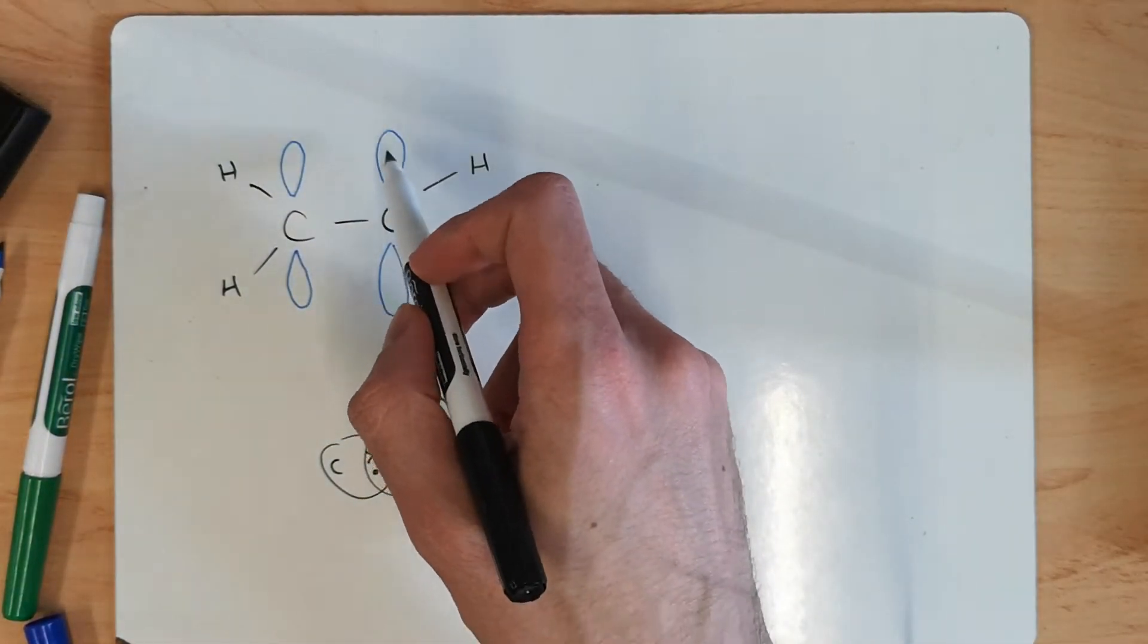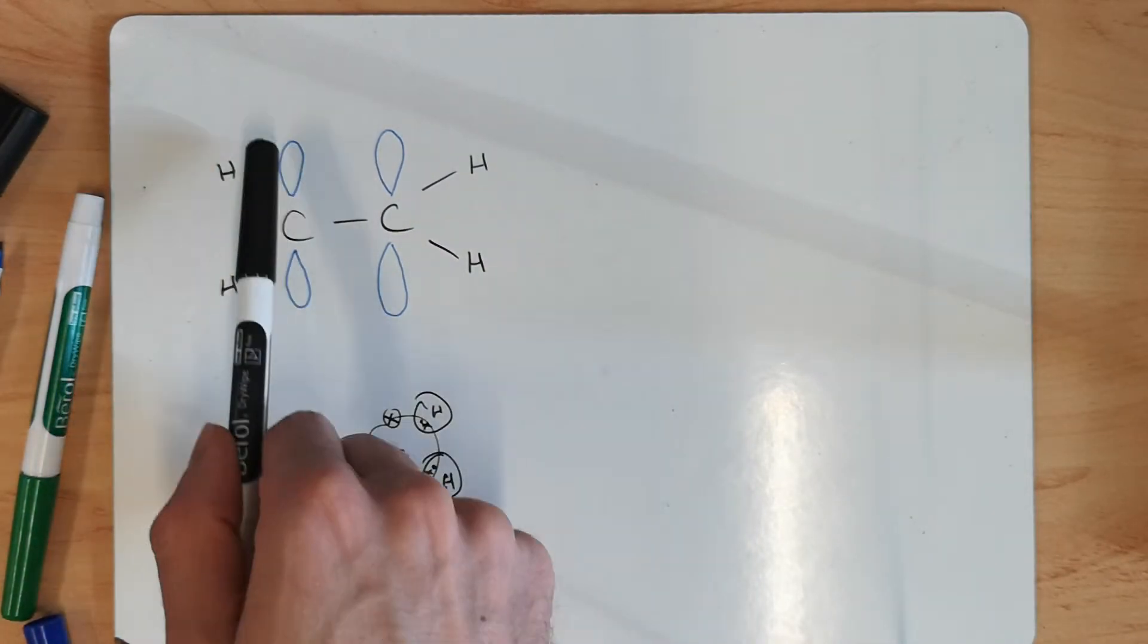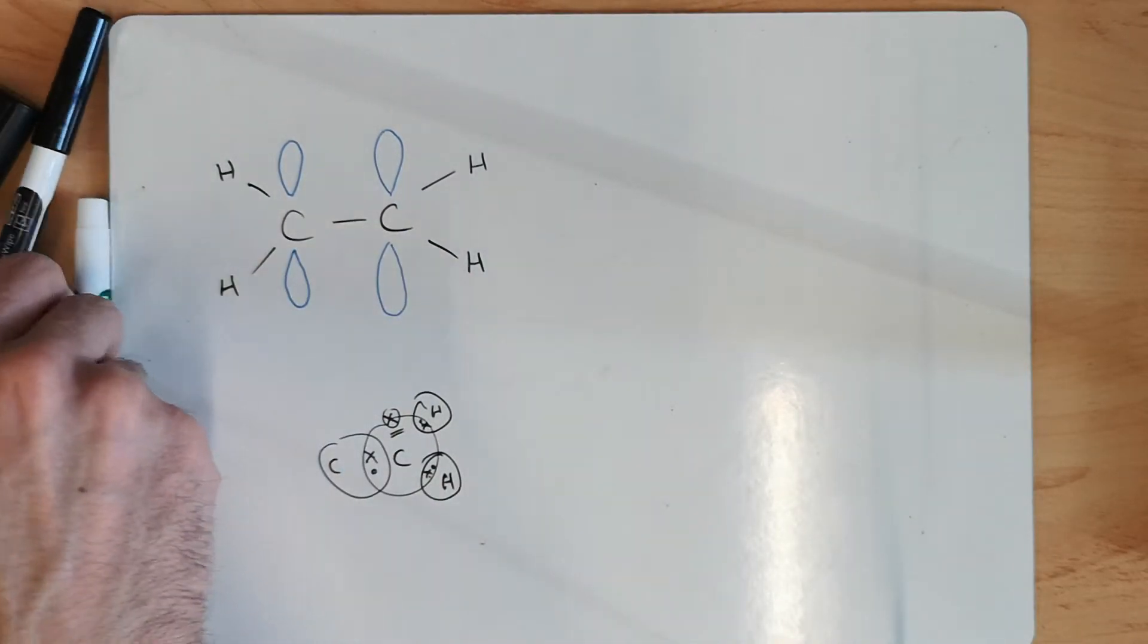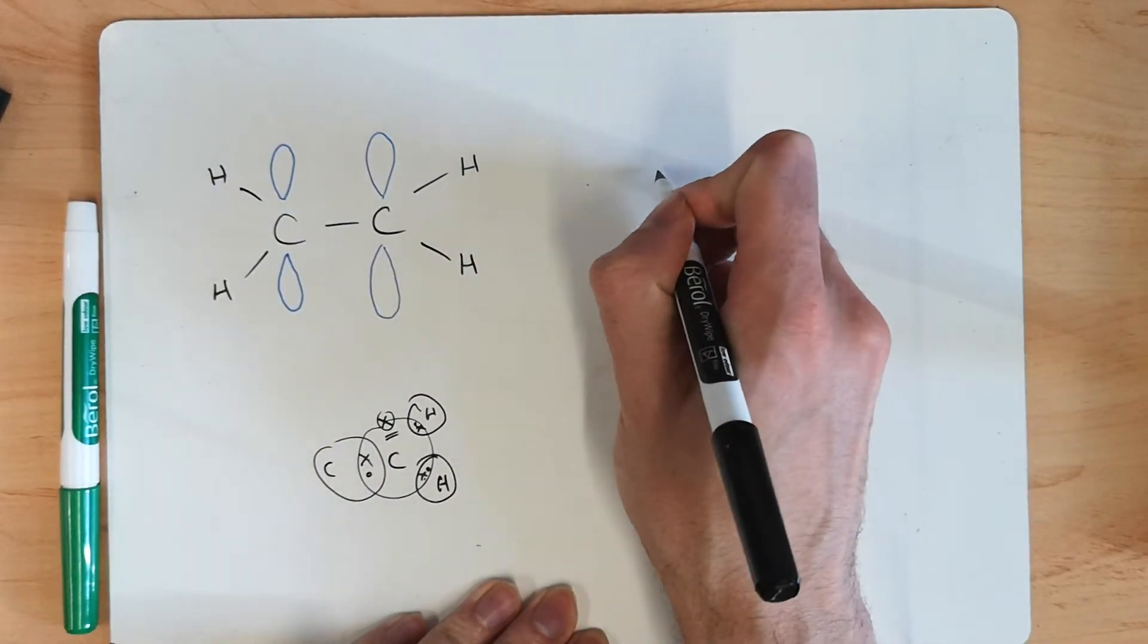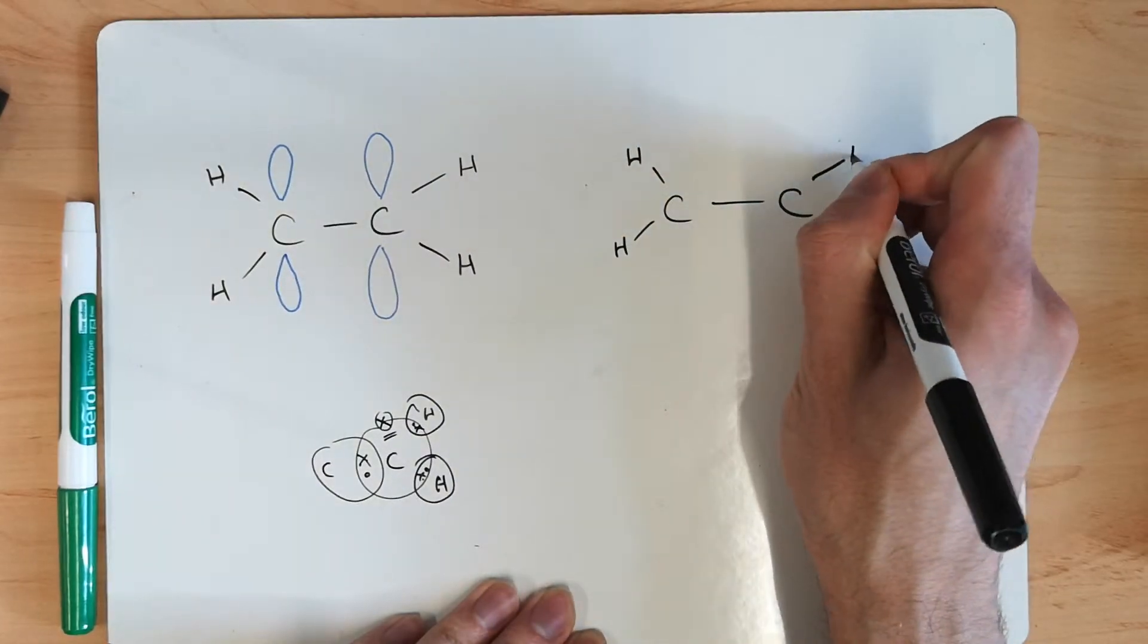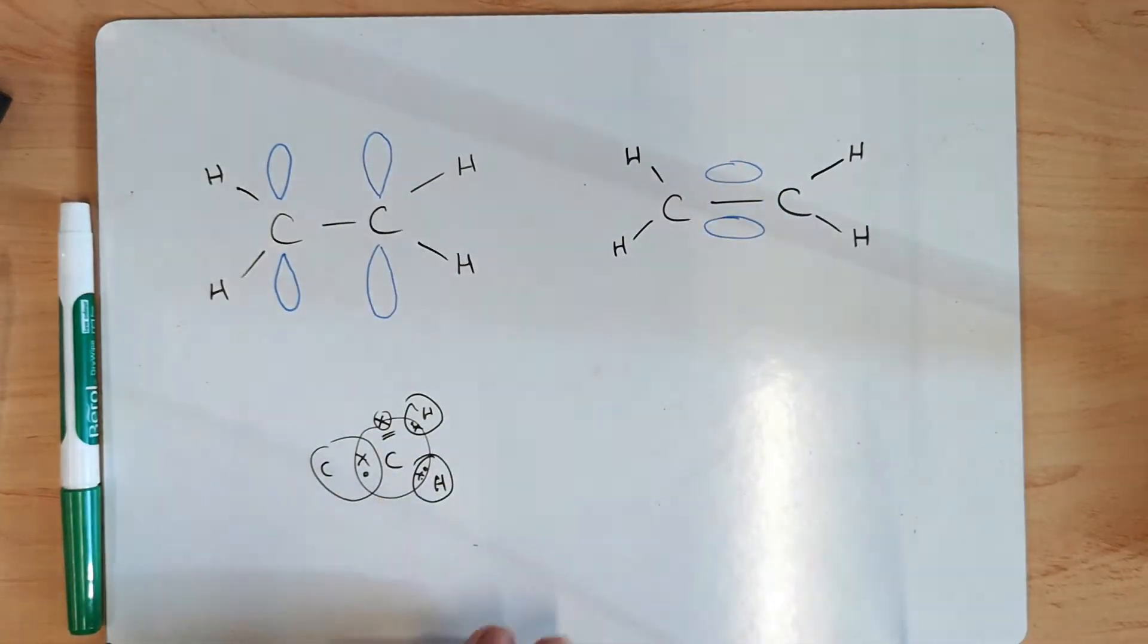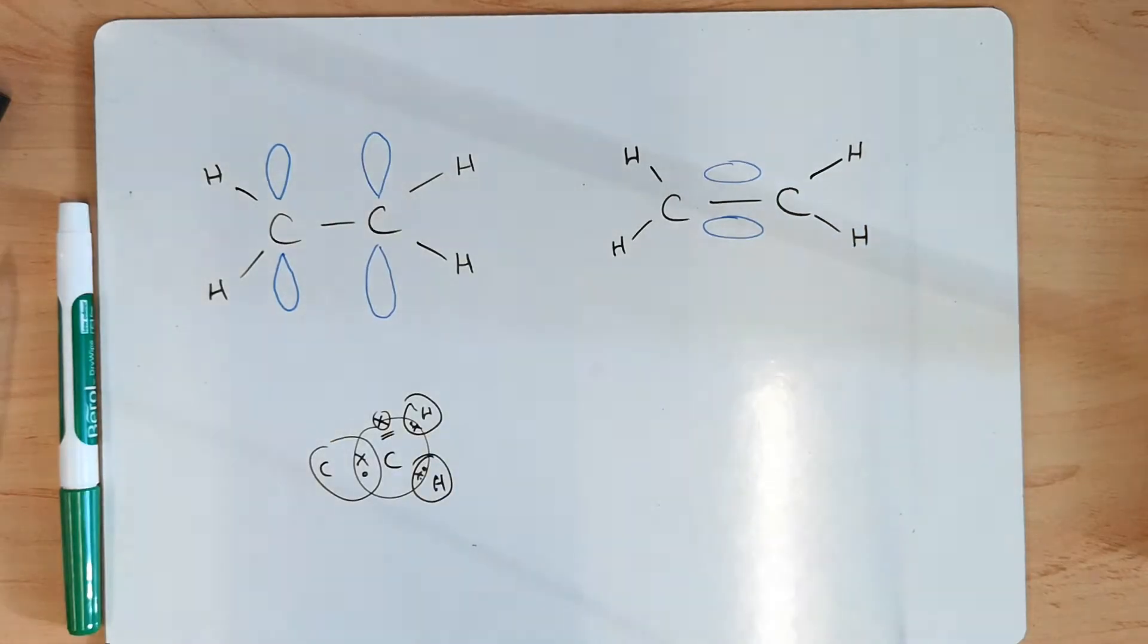So, it's somewhere either up or below the carbon, and this carbon also has a spare electron somewhere in the p orbital. Now, these two p orbitals, they actually overlap, so they're actually a bit bigger than how we draw them on here. And the electrons move into this area where they overlap, so it's either above the sigma bond or below the sigma bond.